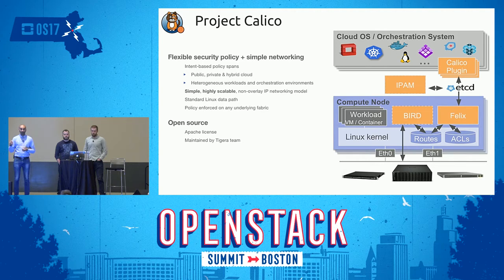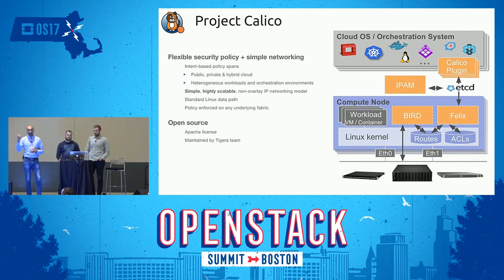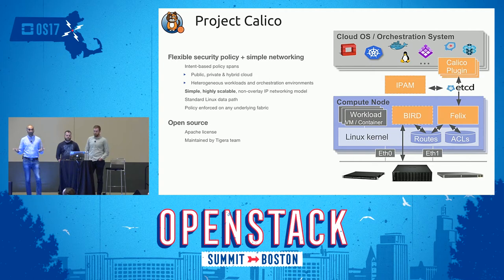Calico creates virtual Ethernet connections that connect the workload — a VM in OpenStack or a pod in Kubernetes — directly to the host namespace. Every compute node or worker node is treated as a router. Routes are added in the host routing table pointing to the workload, and those routes are advertised within the cluster using standard internet routing protocols, specifically BGP. This applies both within the Kubernetes cluster and within the OpenStack cluster.